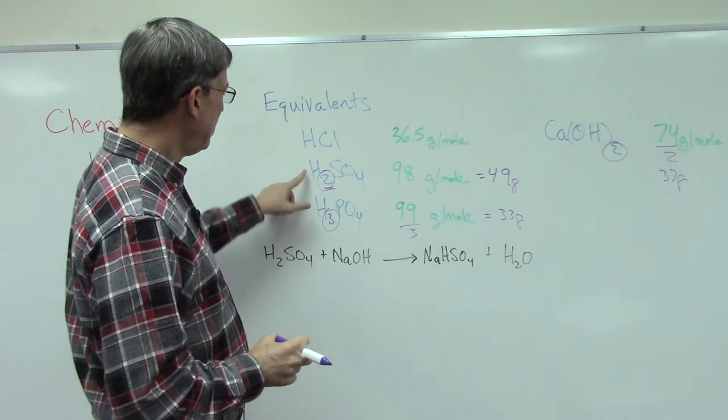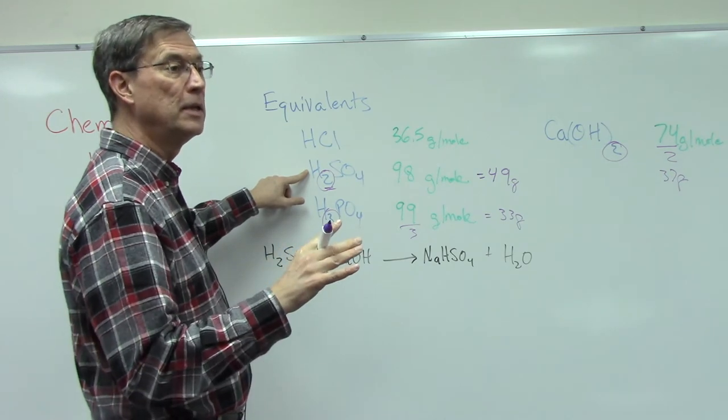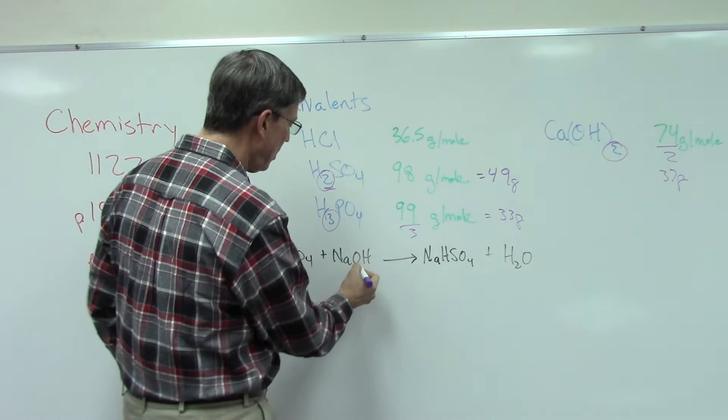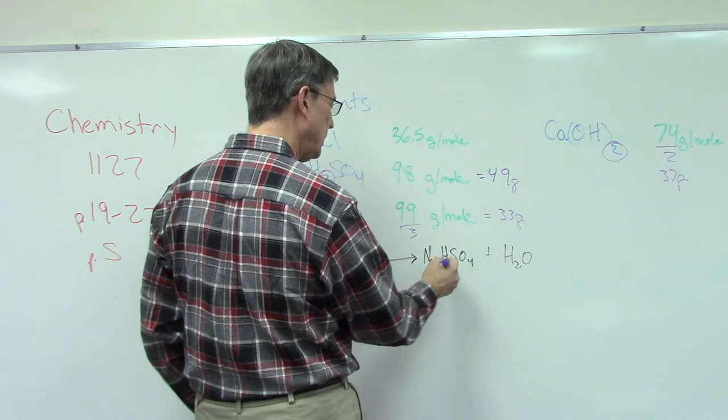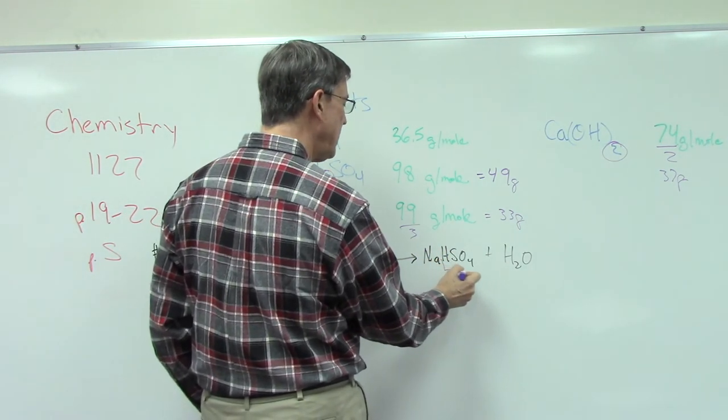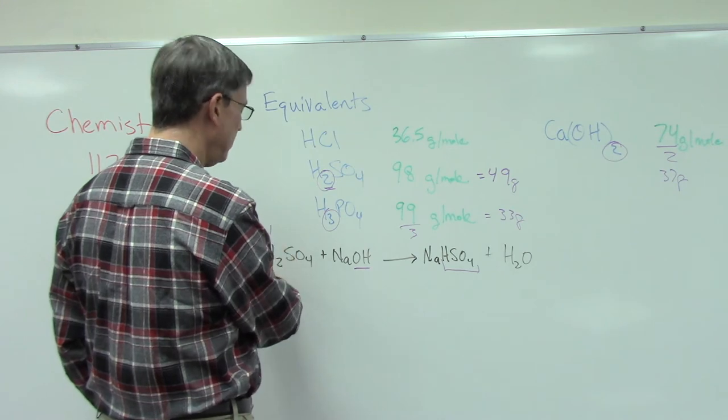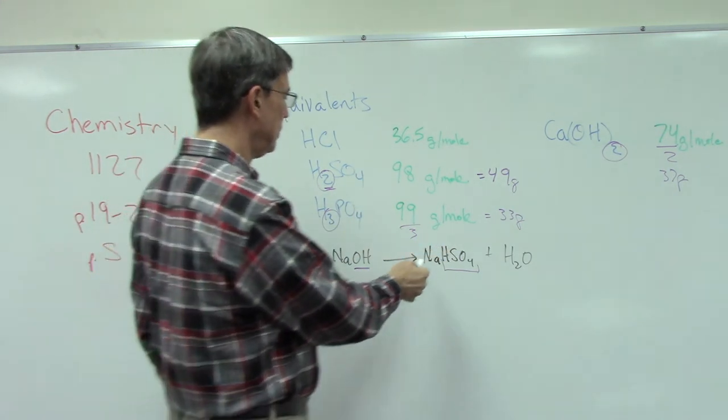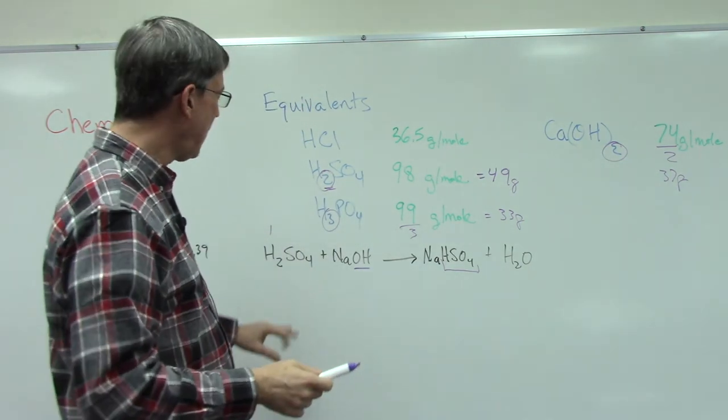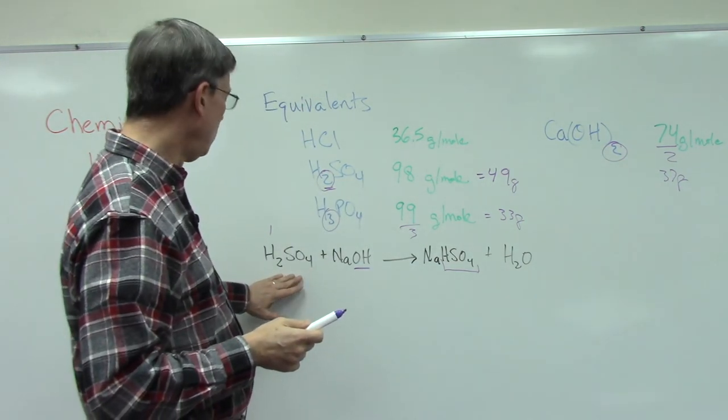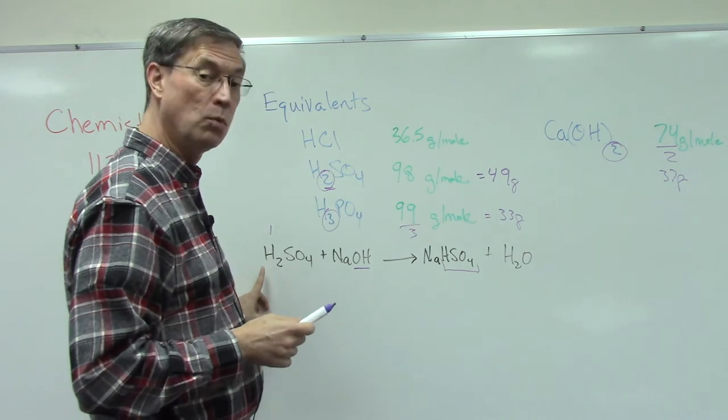H2SO4, we said we could have two equivalents from that if it completely reacted. But notice what's happening in this reaction. I have one equivalent of OH, and then notice I still have HSO4, not just SO4. HSO4, which means only one of these hydrogens is actually going into this reaction, and the other hydrogen is staying bonded to the SO4. So when I have a full mole of H2SO4, instead of producing two moles of hydrogen for the reaction, it's only producing one mole.